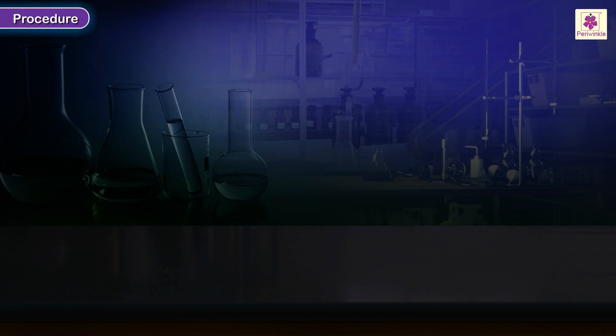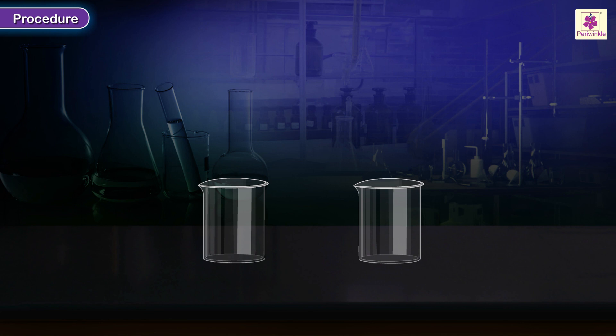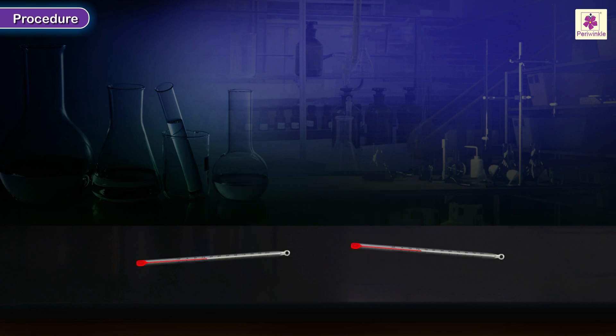Procedure. Take two clean beakers, one labelled A and the other labelled B. Take two clean mercury thermometers, T1 and T2, and note down the temperatures of the respective thermometers after exposing to air for about five minutes.